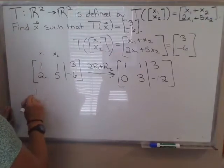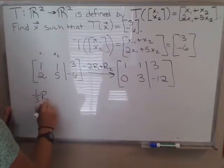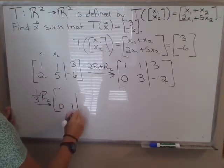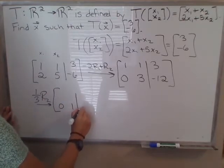I could do 1 third times that row 2, so that row 2 is 0, 1, negative 4.